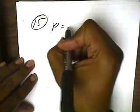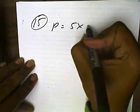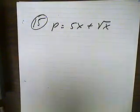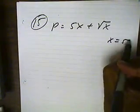Now, let's try number 15. 15, we have p equals 5x plus the square root of x, where x is the number of magazines that you can sell in a month. And, we're currently selling 50 magazines.